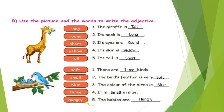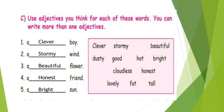There are three birds. The birds' feathers are very soft. The color of the birds is blue. They are small in size. The babies are hungry. The words soft, small, blue, three, hungry are the describing words of a bird — that is the noun — so these words are adjectives. Use adjectives you think for each of these words; you can write more than one adjective. Here in the box, so many describing words are given; we have to choose and put them into the relevant sentences.